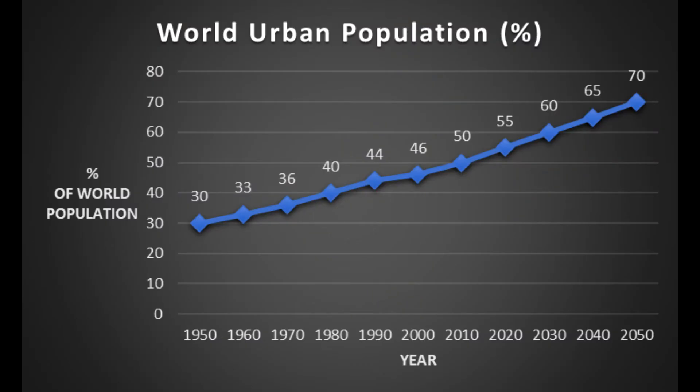If we look at this figure — the world urban population percentage — I want you to try and think about how you would describe this graph. Using title, trend, axis, and data points, could you write a description?